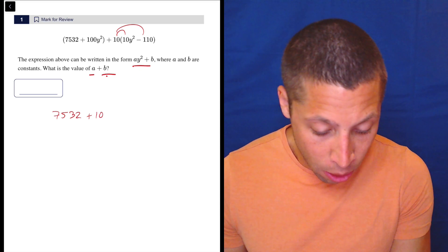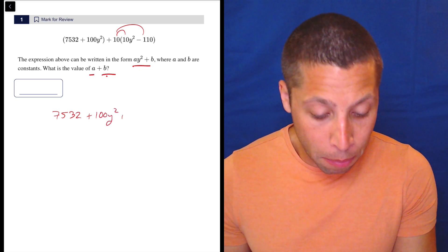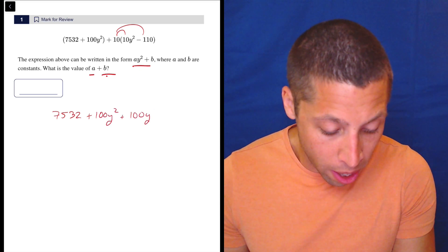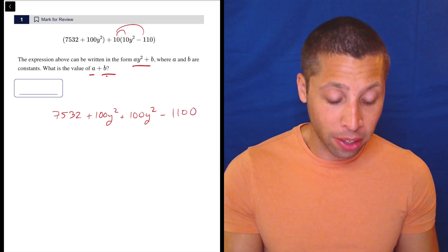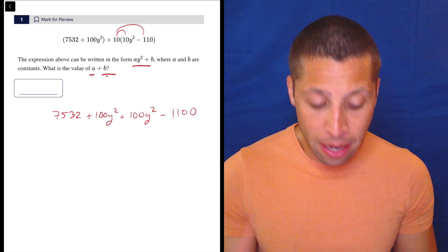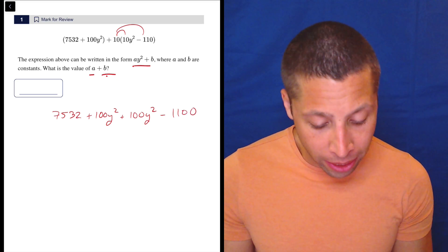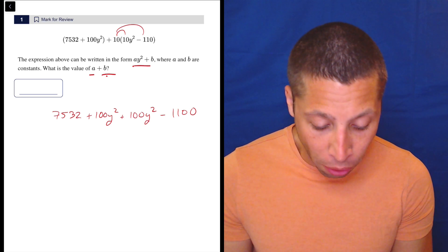7532 plus 100Y squared plus 100Y squared minus 110, right? So no calculator necessary because it's just multiplying by 10. But I would show that step. Don't start combining things until you've seen all the things you're combining.